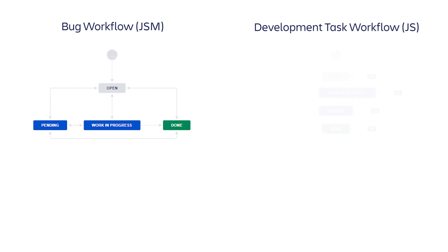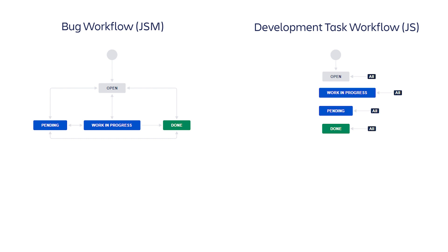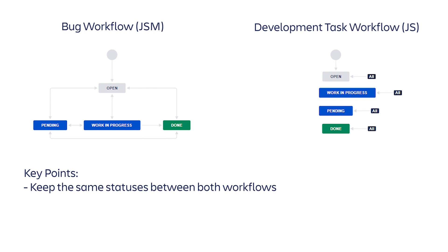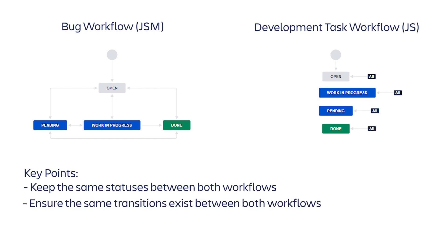Before we start with the automation rule, it is important that the teams have a good understanding of their current workflows for each issue type. For this specific tutorial, we will keep it simple and keep the same statuses in both workflows. As you can see, the same statuses exist on both workflows. In addition to having the same workflows, we have to ensure that transitions between statuses are available in both workflows.